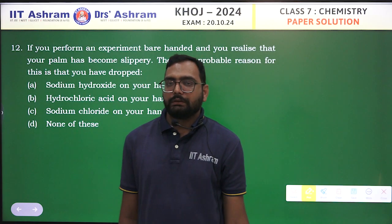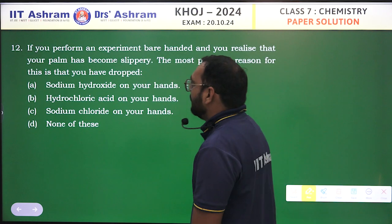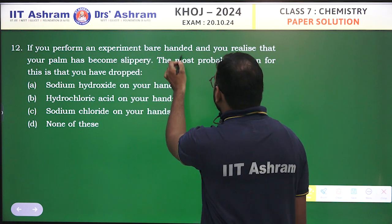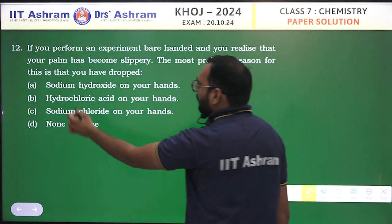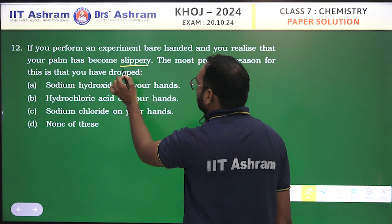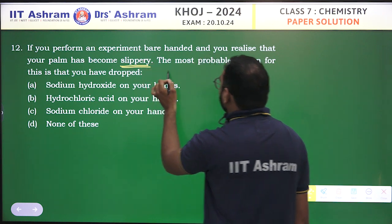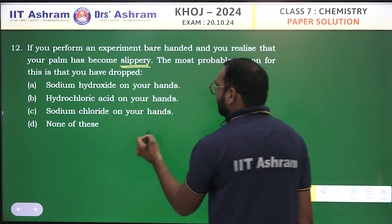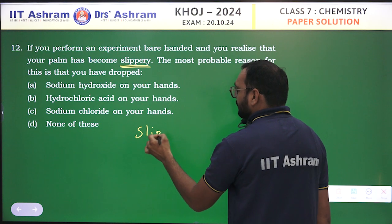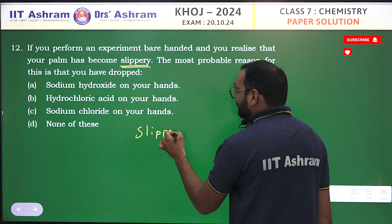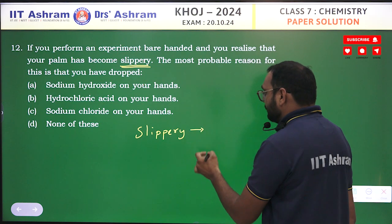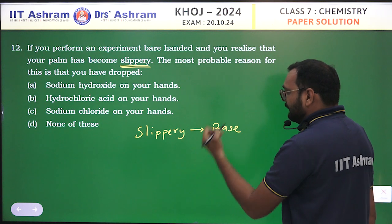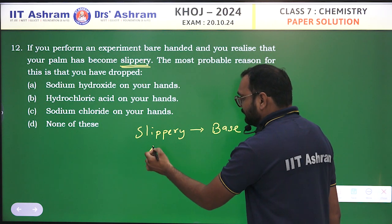Let's do the next question. If you perform an experiment bare-handed and you realize that your palm has become slippery, what is the most probable reason for this? The slippery and soapy touch — this is the property of a base.